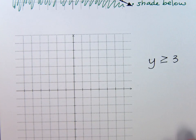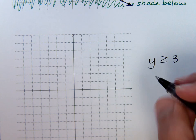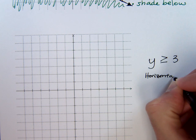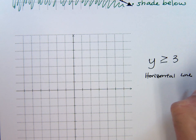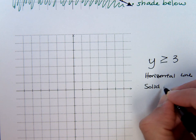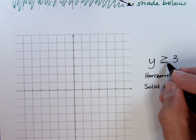If y is greater than or equal to 3, we know all we have is a horizontal line. So we have a horizontal line. We know that it will be a solid line. Why do we know that? That's right, because of the equal to part.